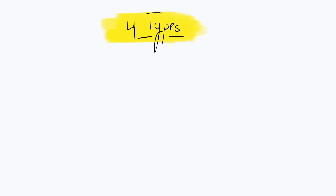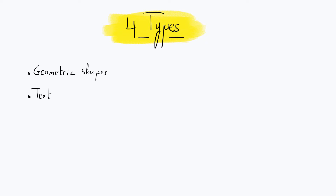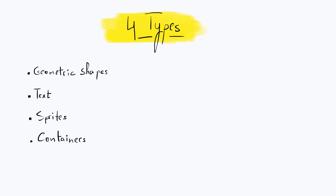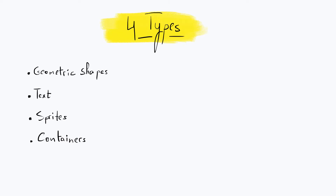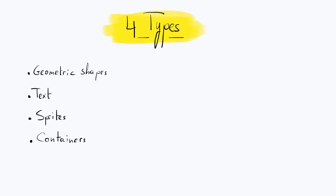There are 4 main types of objects we can create: geometric shapes, text, sprites, and containers. We'll explore each of these throughout this series. In this tutorial we'll focus on geometric shapes.